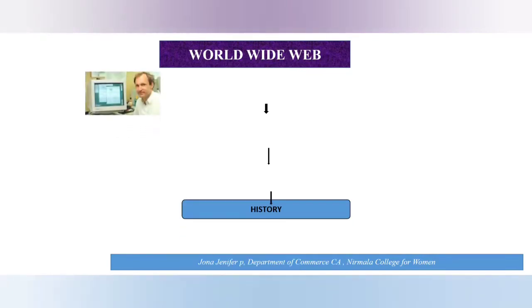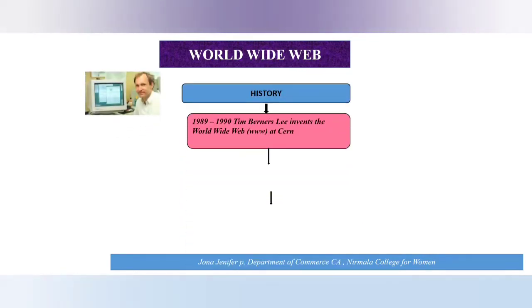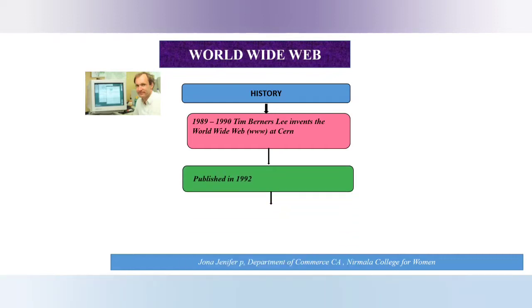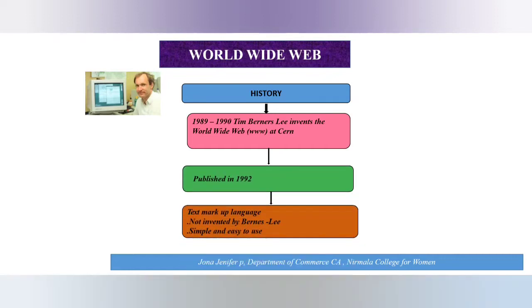Next is the history. In the year 1989 to 1990, Tim Berners-Lee invented the World Wide Web at CERN, and it was published in the year 1992. It is associated with text markup languages and it has two key qualities not solely invented by Berners-Lee: it is simple and easy to use.